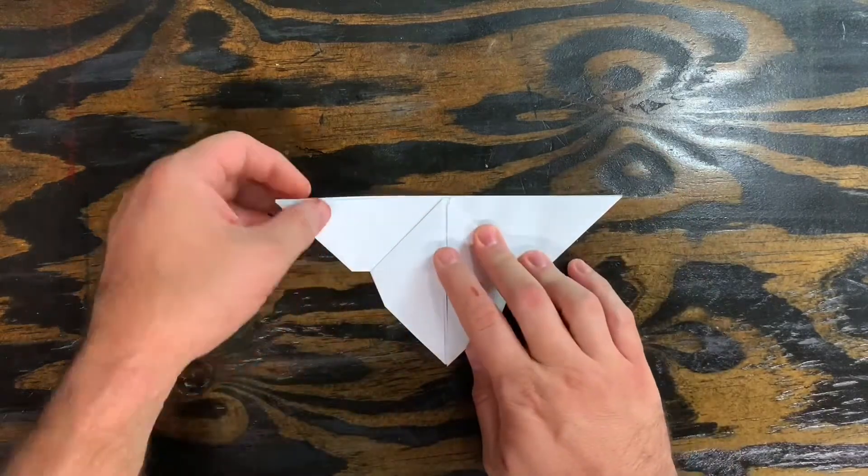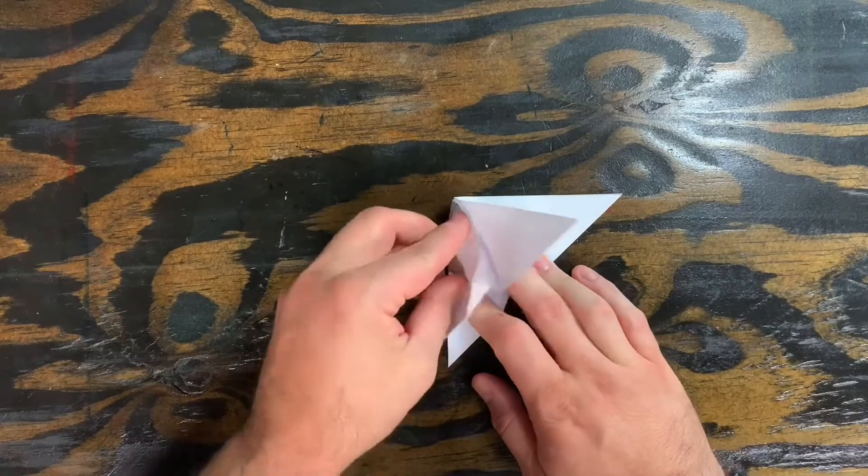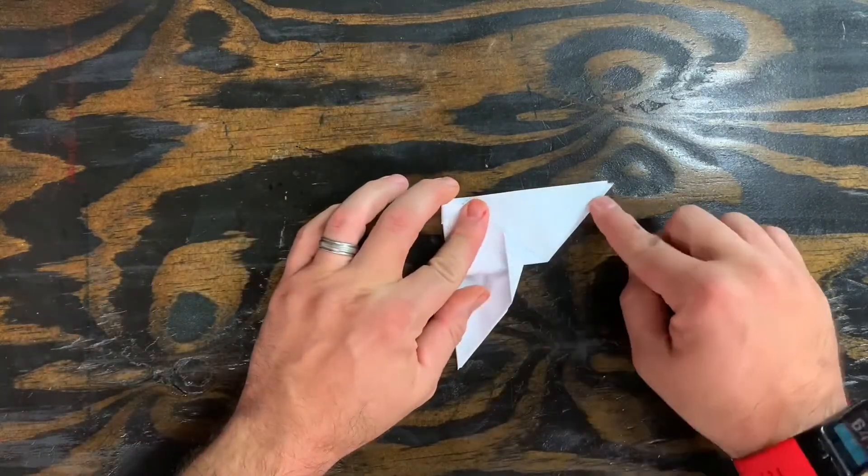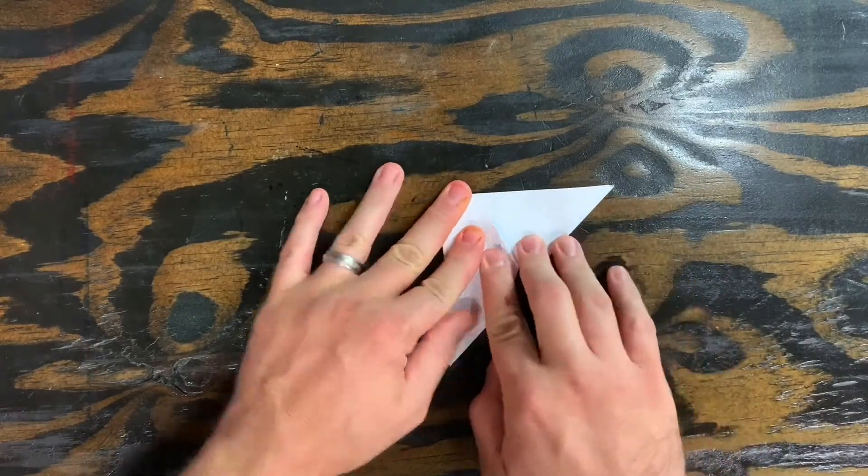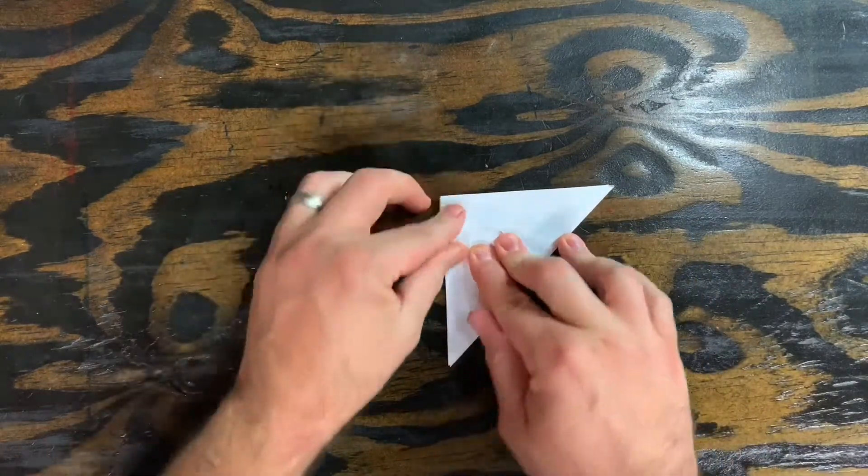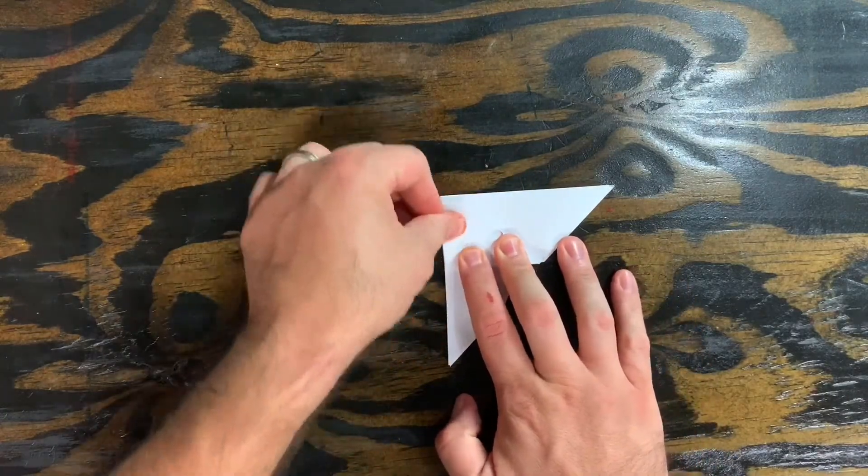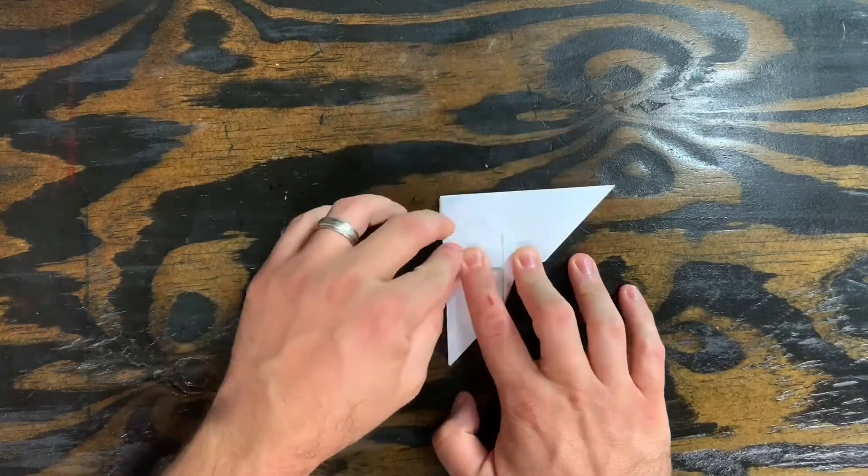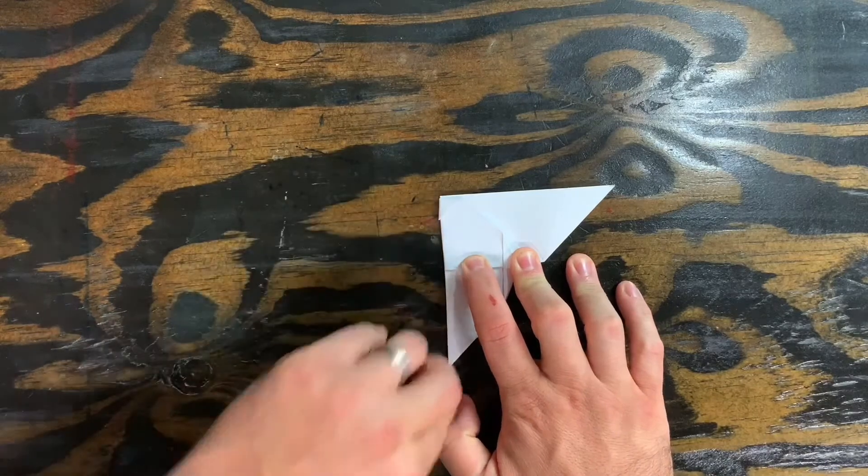We're gonna flip the entire thing over and then we're gonna fold the butterfly in half. Try to keep it even so both wings are folded basically on top of each other. It doesn't have to be perfect. Just get it as close as you can. The closer it is the more realistic it'll be.